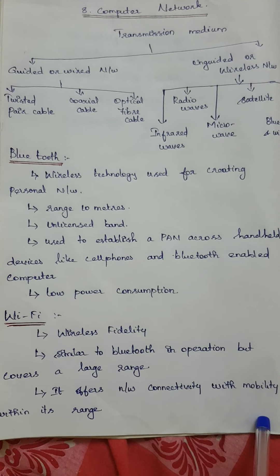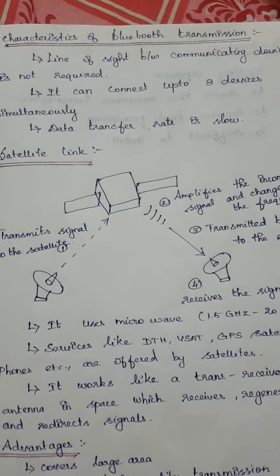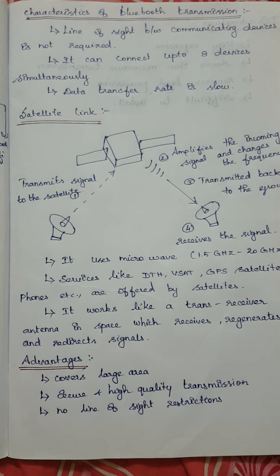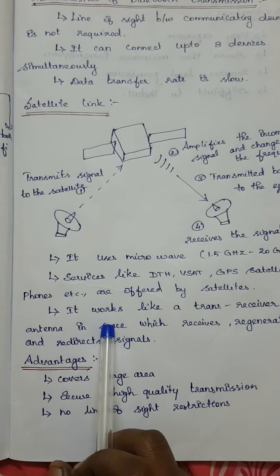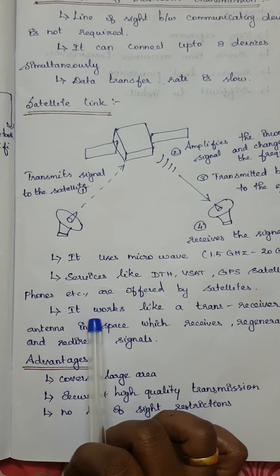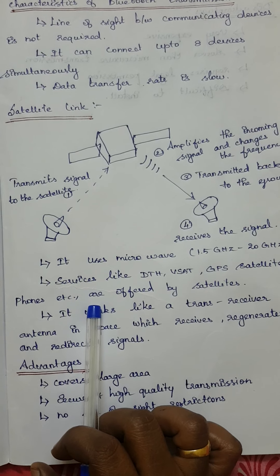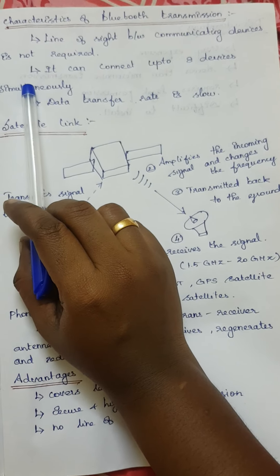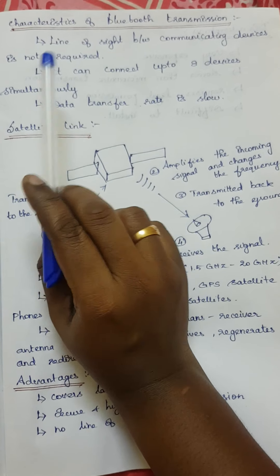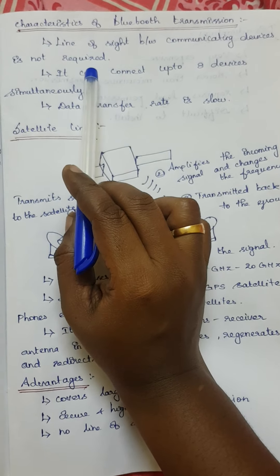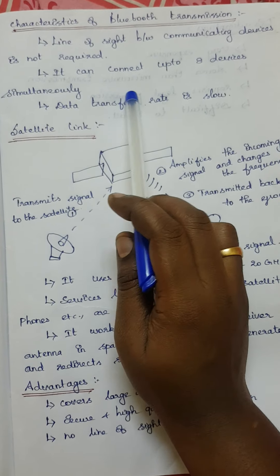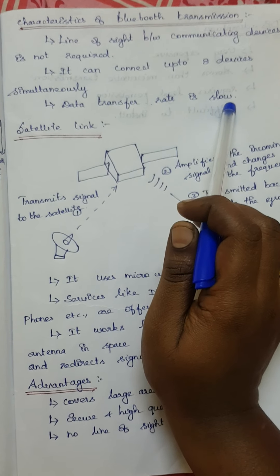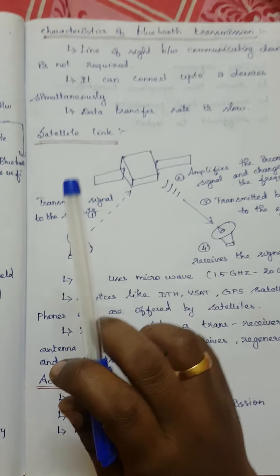The characteristics of Bluetooth transmission: there is no line-of-sight required between communicating devices — the transmitter and receiver do not need to be in a direct line. It provides omni-directional coverage, meaning signals can be transmitted and received in all directions. Up to eight devices can be connected simultaneously in Bluetooth. However, the data transfer rate is very slow, which is a disadvantage.